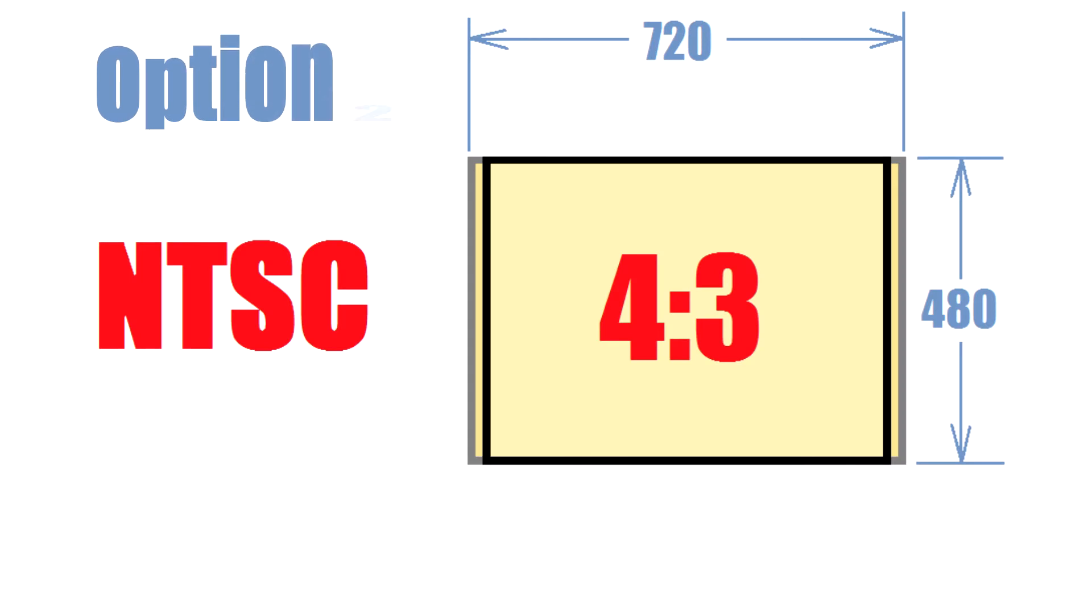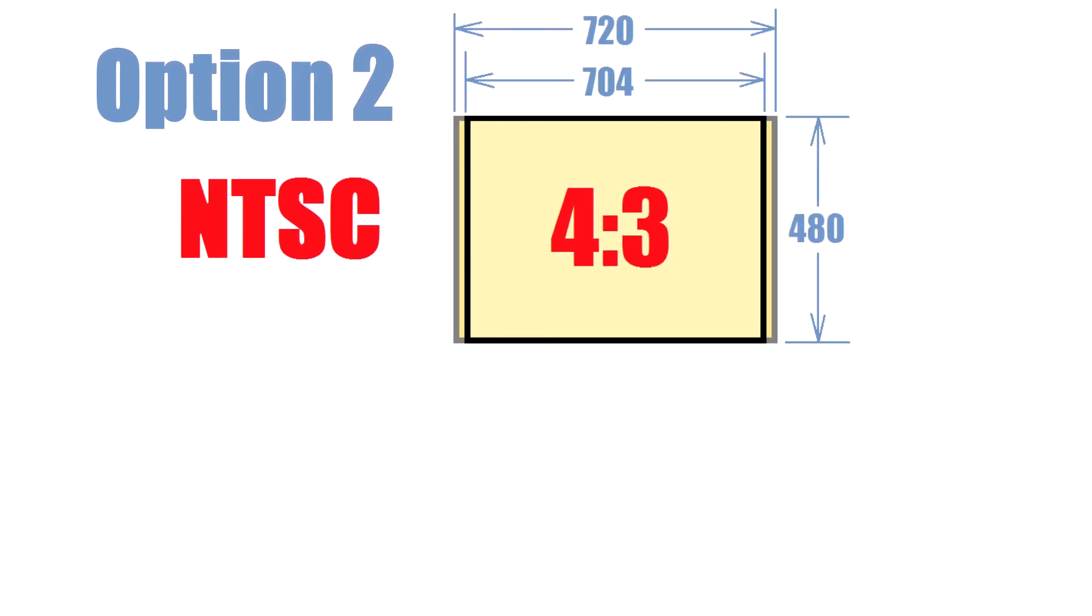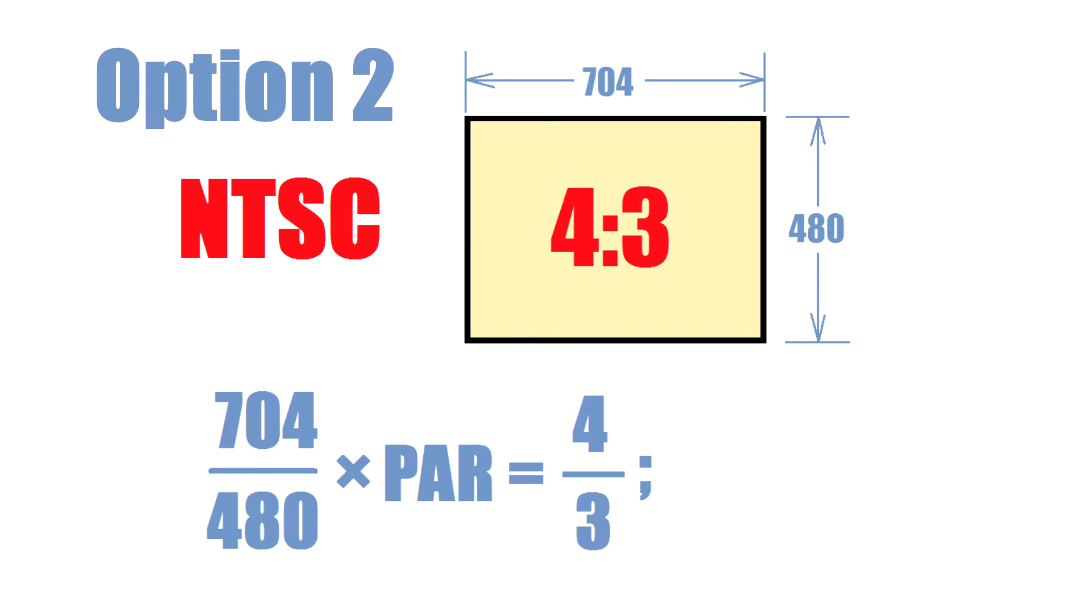The second option is 720x480 frame, but only the 704x480 area is used for active image. The remaining portion is not visible on a regular TV set and can be cropped. In this case, the proportions of the image are defined by the 704x480 area, just like in the previous case.